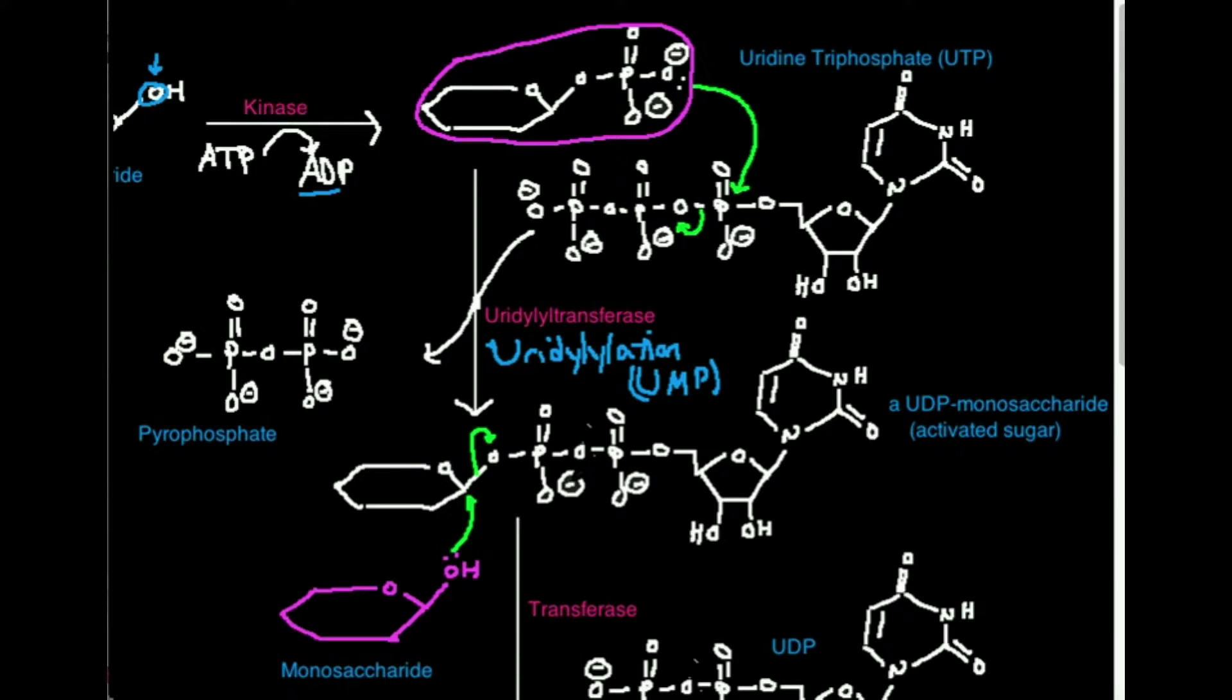Where do you think the UMP is going to come from? Well, it has to come from a UMP donor. So maybe a likely candidate could be UTP or uridine triphosphate. It's kind of an analog of ATP, except adenine is replaced with uracil. So this is UTP.